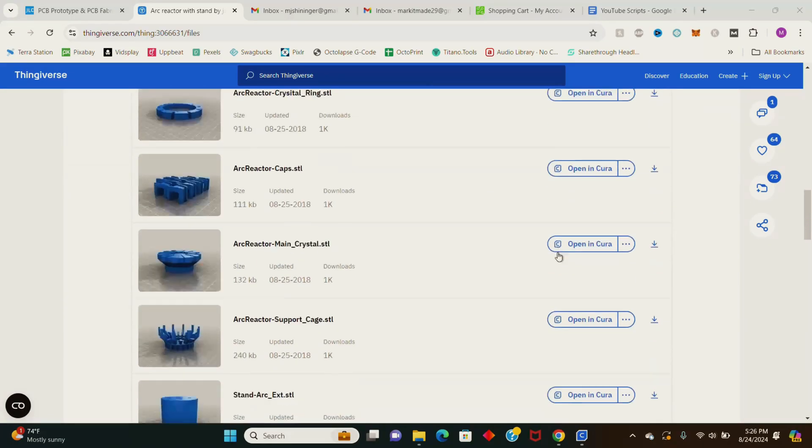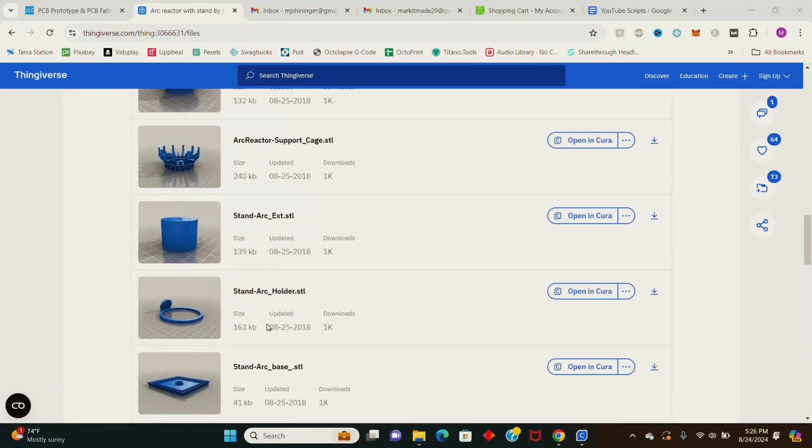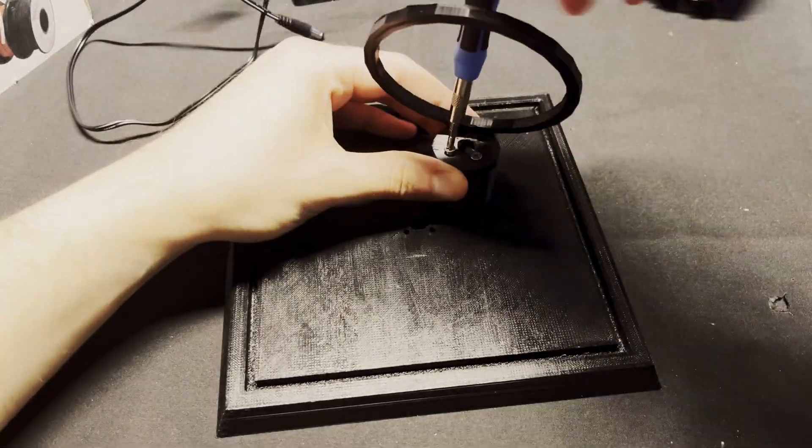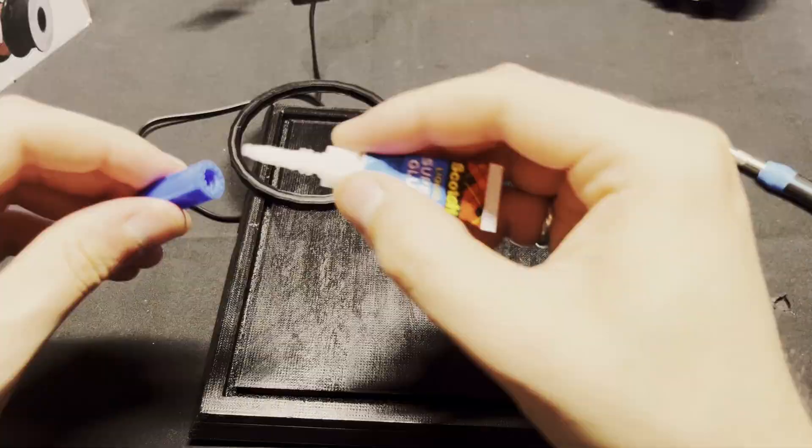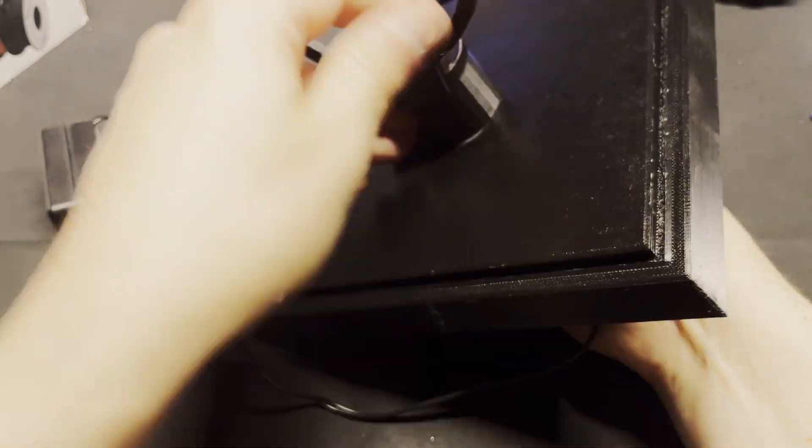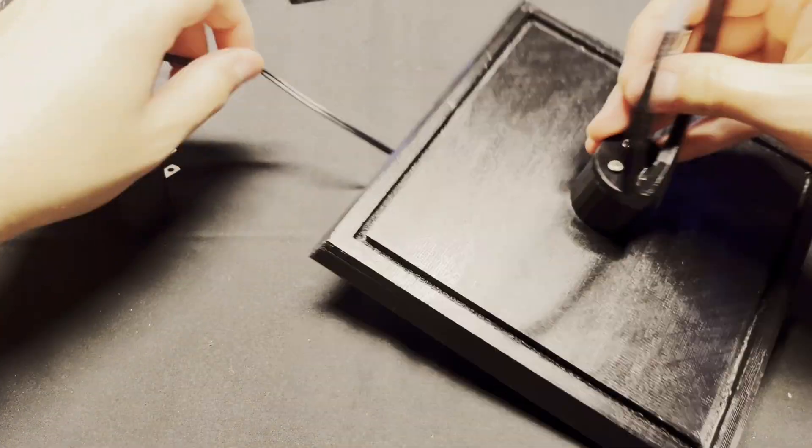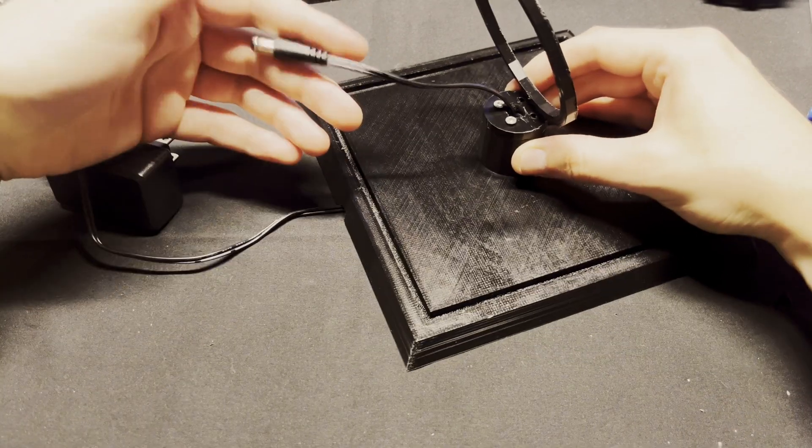After the arc reactor was assembled I went on Thingiverse to download a stand to display it. I printed the stand in black PLA and assembled it using some M3 screws and super glue. I routed the power supply wire through the stand so I can easily plug in the arc reactor while also hiding the cord.